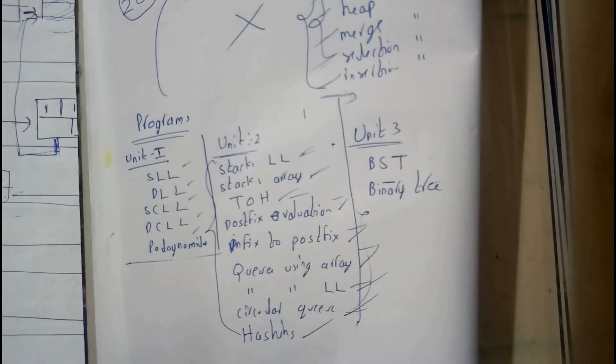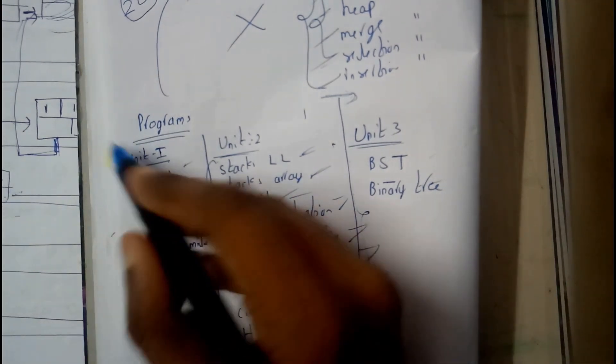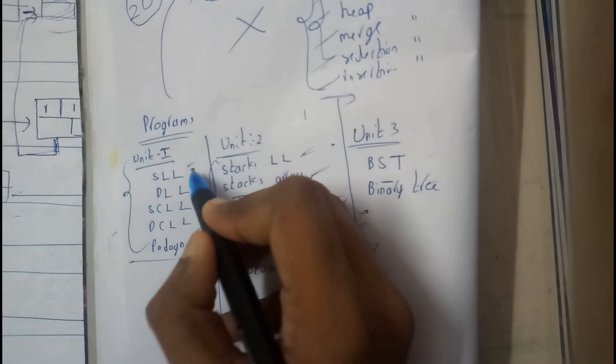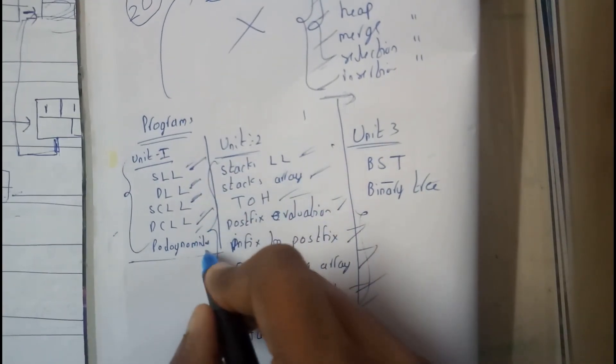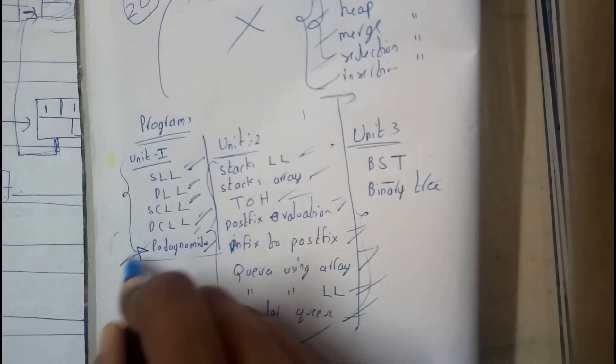Hello guys, we have just completed our first unit. The important programs of our first unit are: single linked list, double linked list, single circular linked list, double circular linked list, and polynomial.